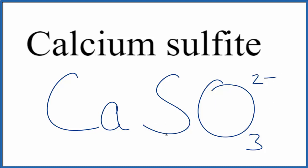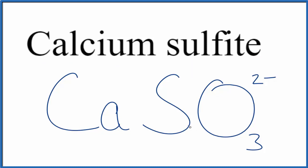So at this point we have Ca SO3 2-. Calcium is a metal, and sulfite is a group of nonmetals — it's a polyatomic ion. Since we have an ionic compound, we need to think about the charges. Calcium is in group 2 on the periodic table, so it's 2+. The sulfite ion, we said, has a charge of 2-.